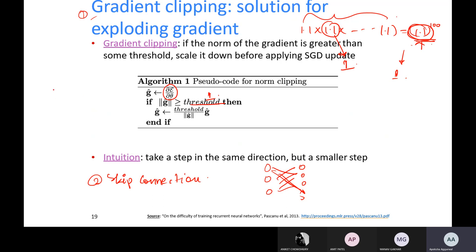To summarize solutions: GRUs and LSTMs address vanishing gradient; gradient clipping and skip connections address exploding gradient. However, GRU and LSTM are only a partial solution — they can solve the vanishing gradient problem to some extent, not completely.